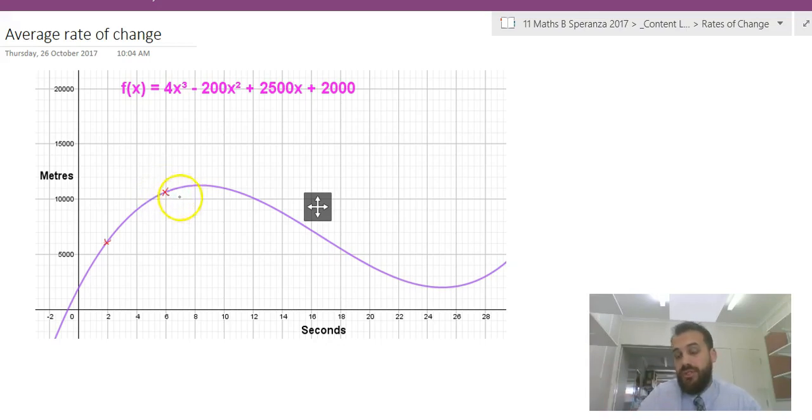This is a really straightforward question. All we need to do is draw a straight line between those two points and find the gradient of that line. You might remember gradient as rise over run. Now a formula for gradient you should remember: m equals y2 minus y1 over x2 minus x1.